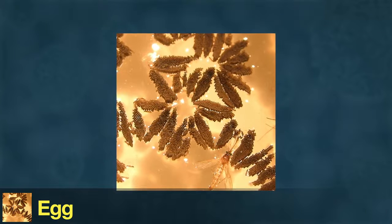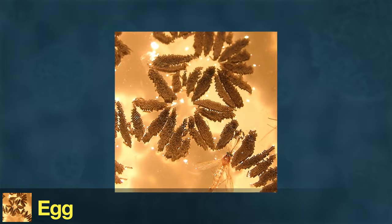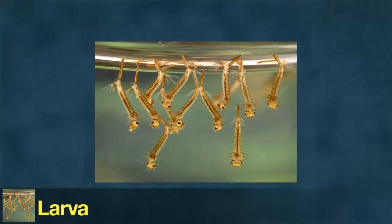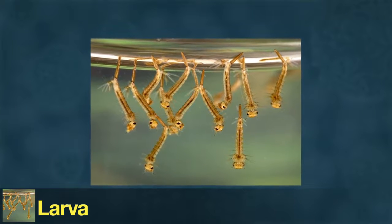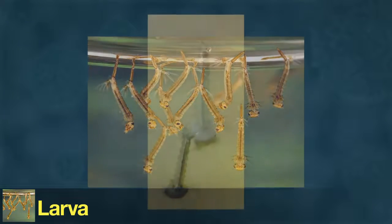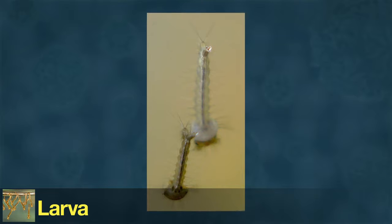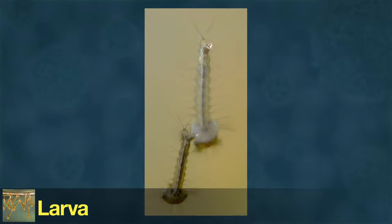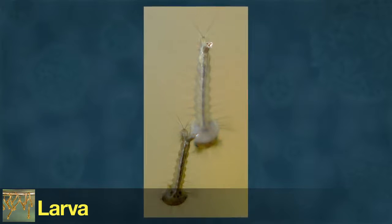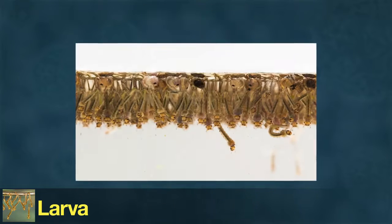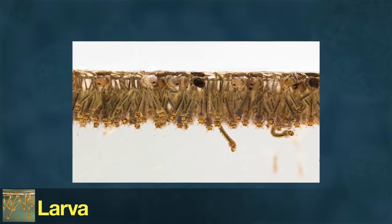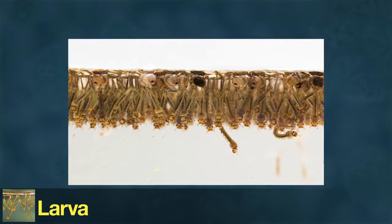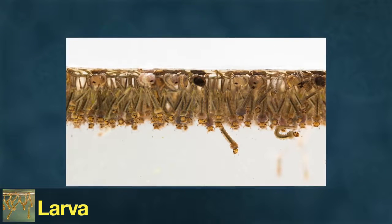Once a mosquito hatches from its egg, it enters the second stage of its life cycle—the larva. The larva lives underwater and eats algae, plankton, and other microorganisms. Larvae need air to breathe, and many mosquito species have a breathing tube by their tail called a siphon. These larvae hang upside down and stick their siphons above the water to get air. A mosquito stays as a larva for 4 to 14 days, depending on temperature and species.